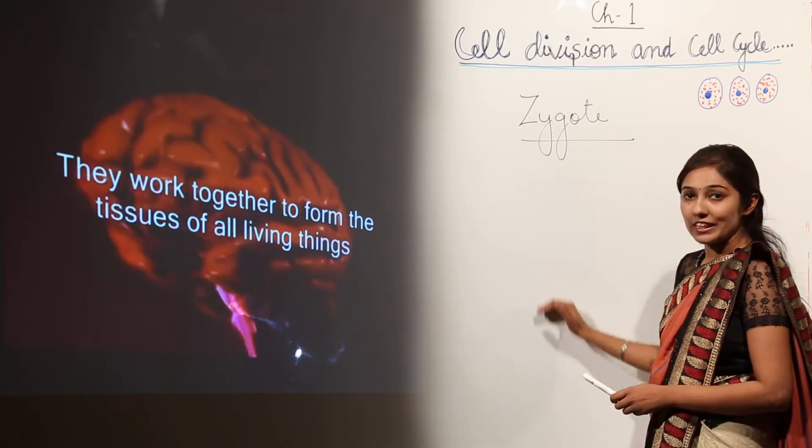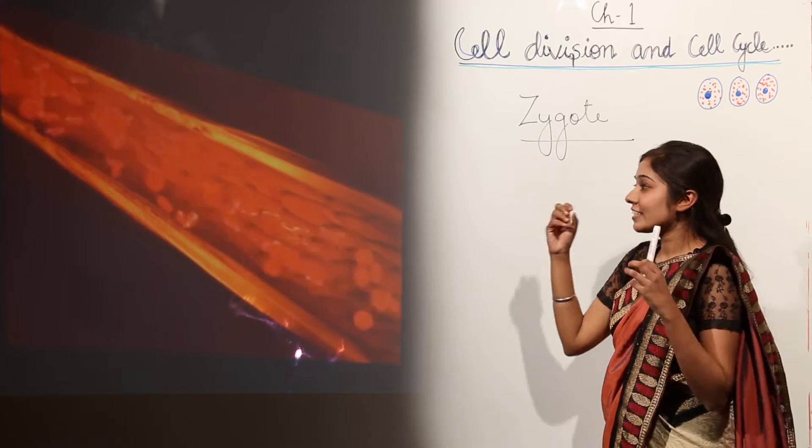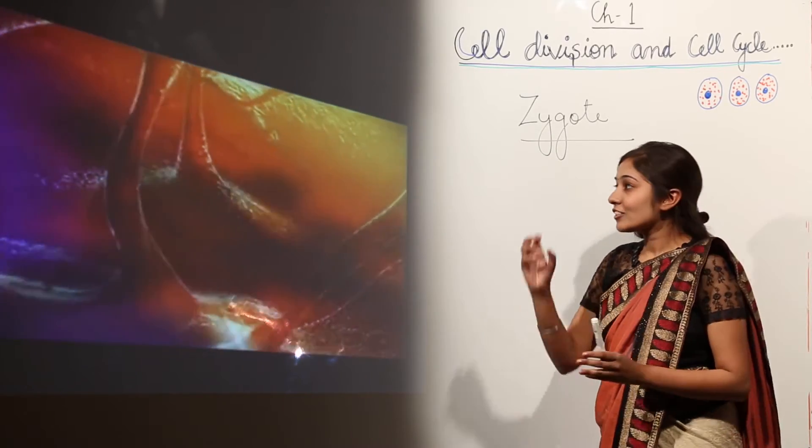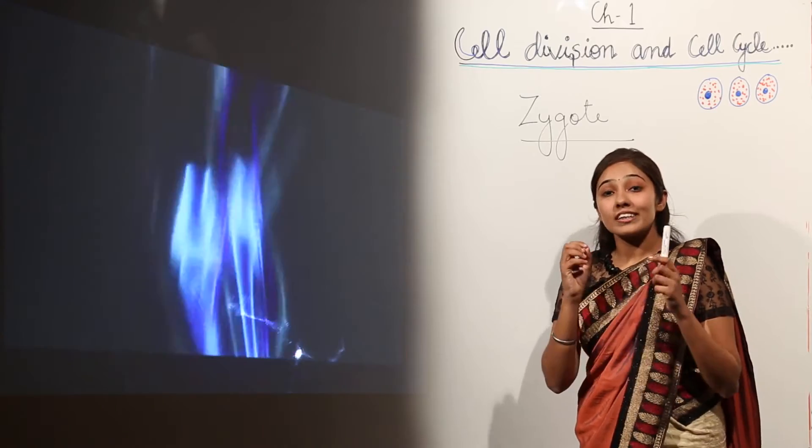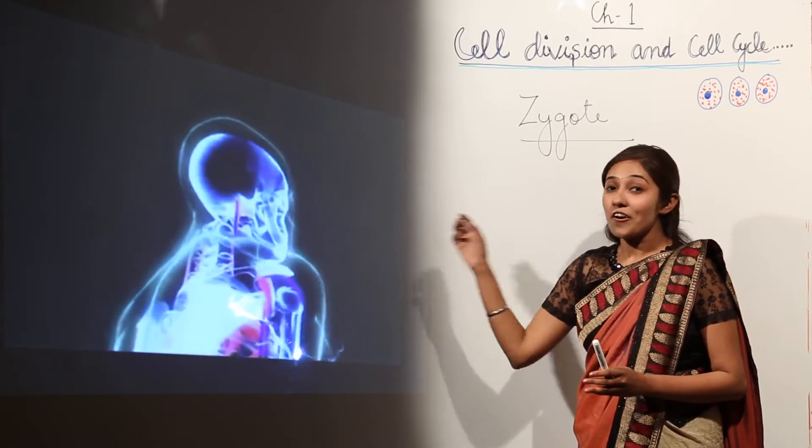eventually forms a complete organism. How do the cells work together to form tissues? These tissues together work to make an organ, and this organ forms an organ system, and this organ system finally forms a complete organism, as you